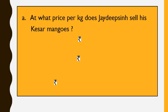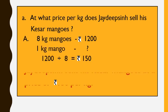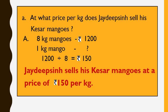Your work is to find at what price Jaydeep Singh sells Kesar mangoes per kg. It is given that Jaydeep Singh sells his organic Kesar mangoes for Rs. 1,200 per box, and each box contains 8 kg. So 8 kg mangoes cost Rs. 1,200. We cross multiply 1 by 1,200 to get 1,200, then divide by 8, giving Rs. 150. So, Jaydeep Singh sells his Kesar mangoes at Rs. 150 per kg.